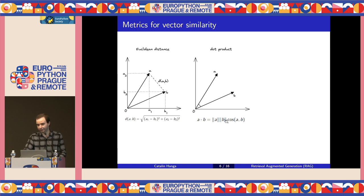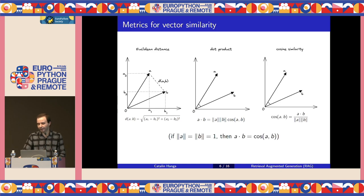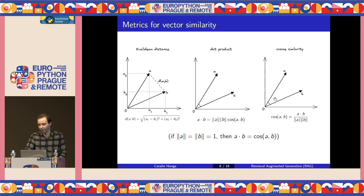Another metric is the dot product, which is given by the product between the lengths of the vectors and the cosine of the angle between them. This is a metric that depends on the orientation of the vectors — the dot product will be larger if the vectors are pointing in the same direction and smaller if they're pointing in opposite directions. Probably the most popular similarity metric is cosine similarity, which is just the cosine of the angle between the vectors. If the vectors are normalized with length equal to one, then the dot product is the same as the cosine similarity.